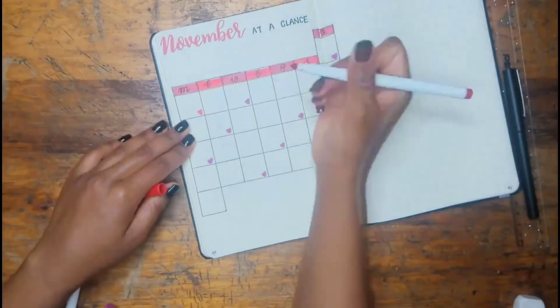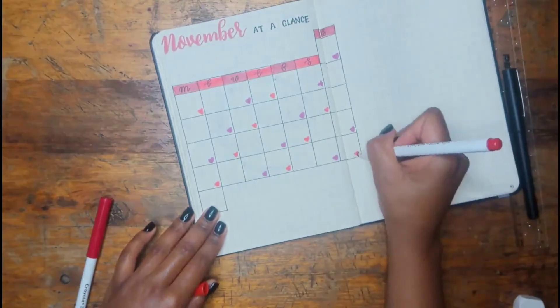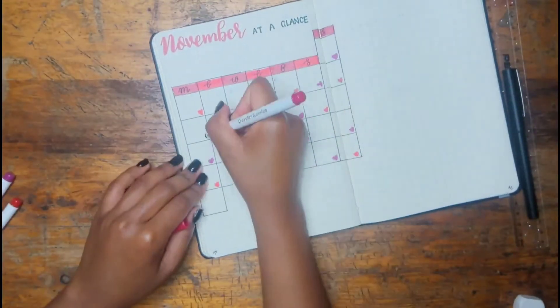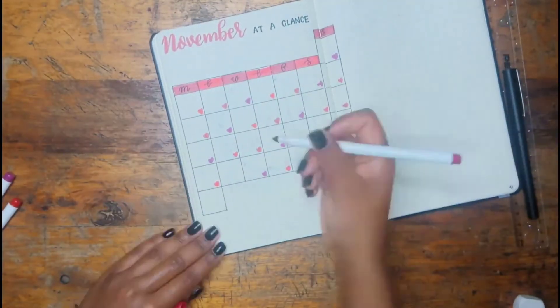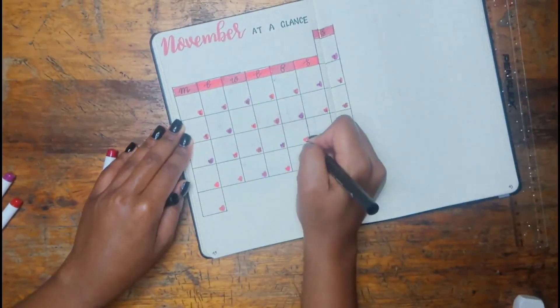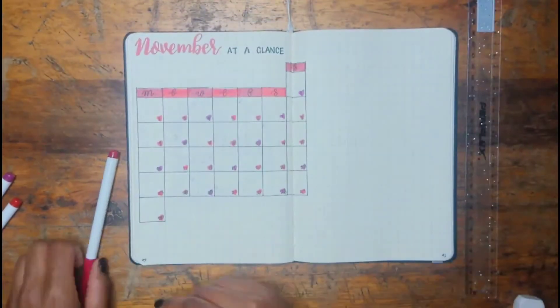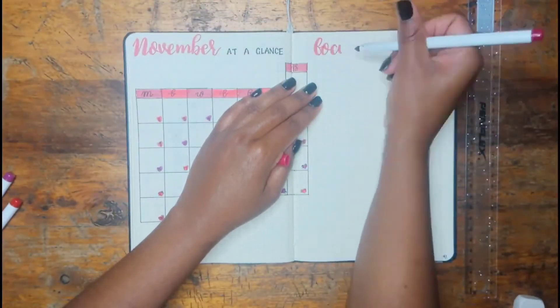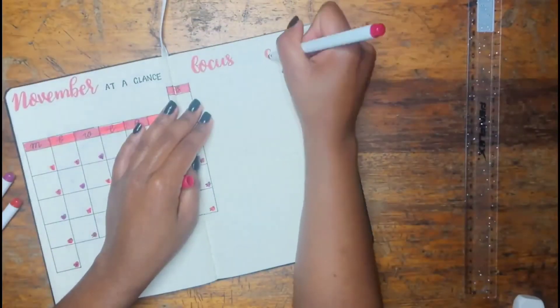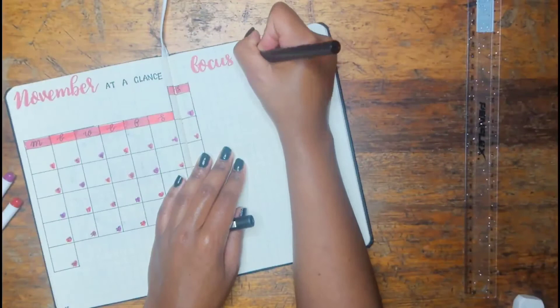I added these little hearts which are going to be where I write the numbers of the days. I kind of alternated the three colors and these colors are like one is red and one is almost like maroonish-ish kind of and one is a really dark pink that's almost like purple. Those are the three markers I've used throughout the spreads.